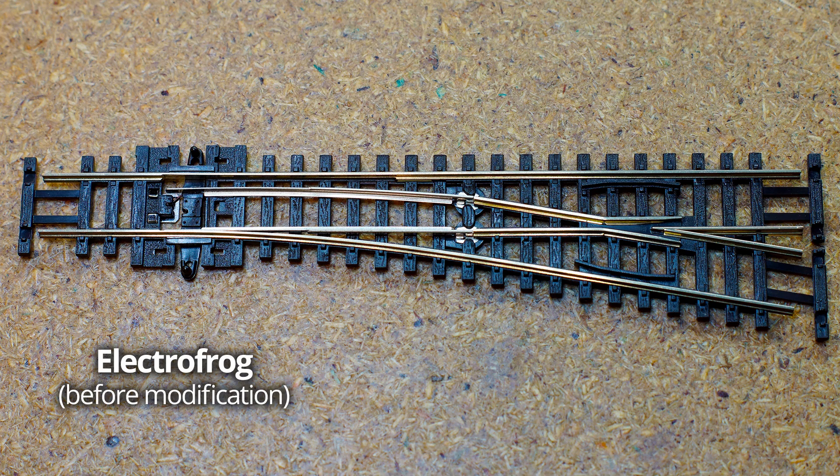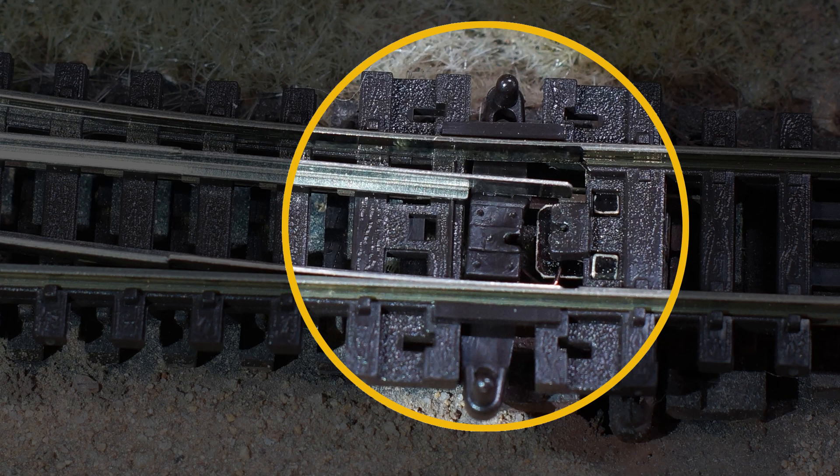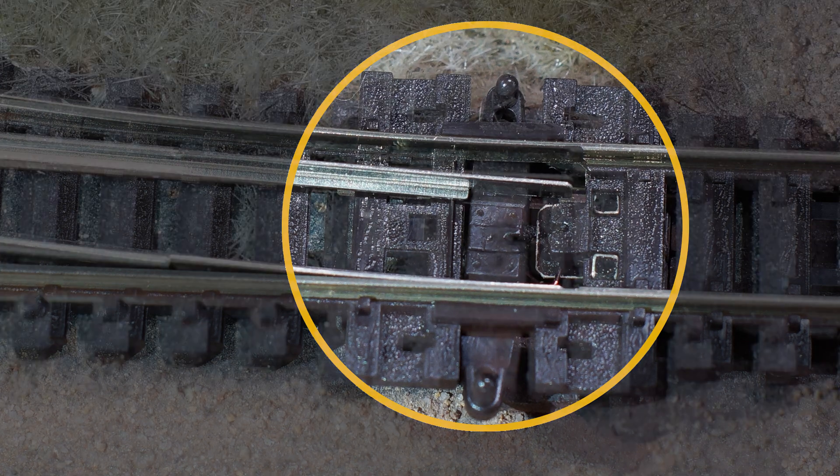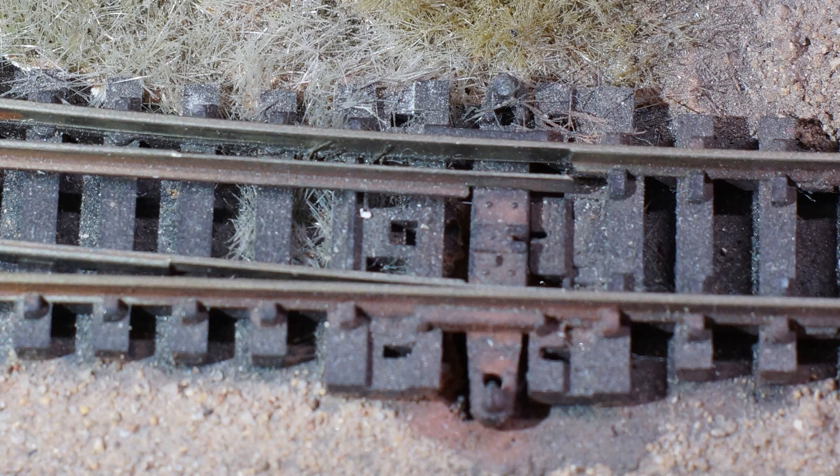There are three main reasons we need to modify electrofrogs for a DCC layout. The biggest problem with electrofrogs is you're relying on transmitting electrical conductivity through a dry connection. This is right in here where the blades make contact with the outer stock rails. They work fine when they're new, and here's what new looks like straight out of the packet. But very soon, a layer of oxidisation builds up on the nickel surface, and you'll be forever cleaning these for reliable running.